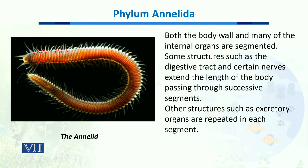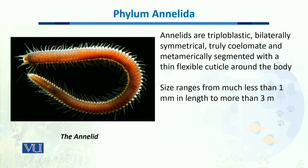Other structures, such as excretory organs, are present in each of these hundred segments. Annelids are triploblastic organisms, meaning their body is composed of three layers, and they are bilaterally symmetrical.